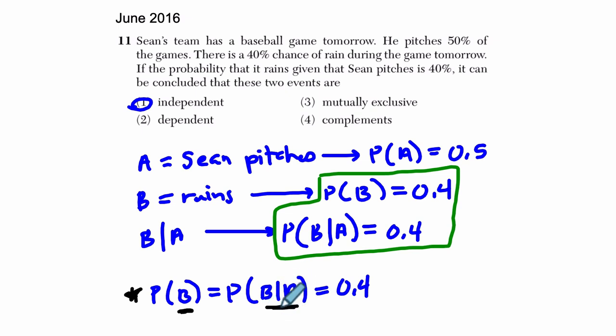It would be really strange if Sean pitching somehow lowered or raised the probability of it raining. So they should be independent of each other. They should not change each other. So the probability of it raining, whether or not Sean has pitched, should be the same. It's unchanged.